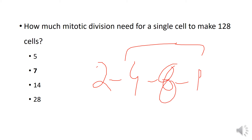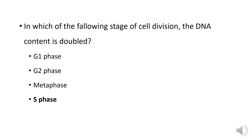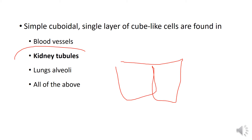Continuing the mitotic division count: 8, 16, 32, 64, 128. In which of the following stages of the cell cycle is DNA content doubled? The answer is S phase. Simple cuboidal epithelium — single layer of cube-shaped cells — is found in the kidney tubule.